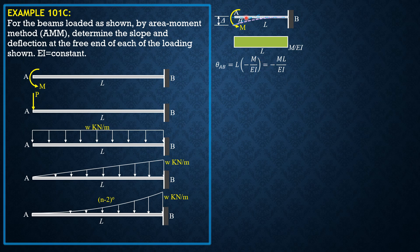The negative sign means that the tangent at A, which is inclined upward, rotates clockwise relative to the tangent at B. Clockwise rotation is negative, but the slope at the free end is positive because it is inclined up to the right. Therefore, in general, theta = ML/EI.